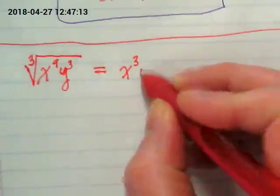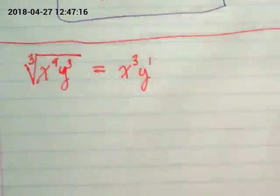X to the three and Y. And you can put the one there if you want, or you can leave it invisible.